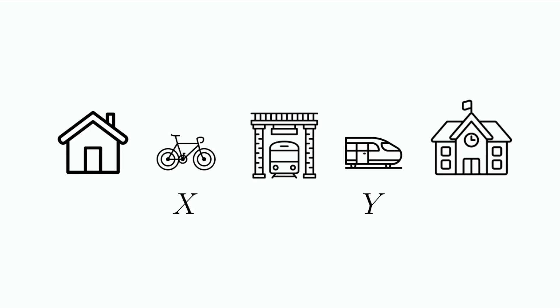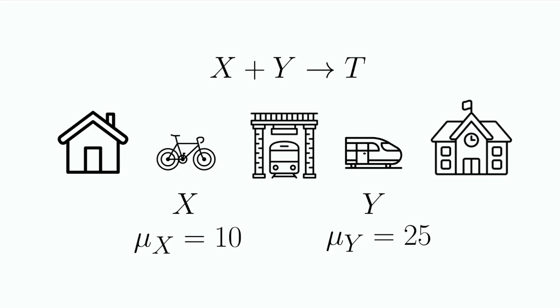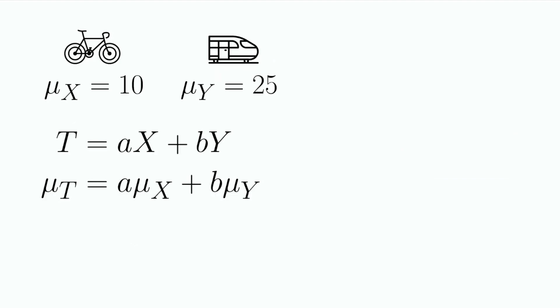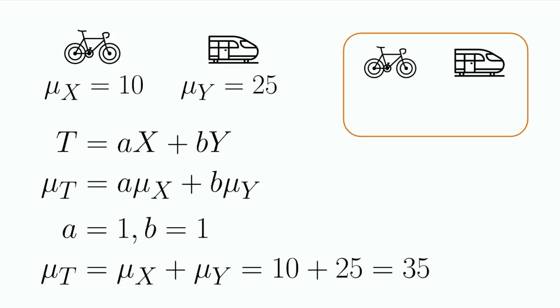Let's apply this to our commute example. The random variable for your time on a bike is X, while the random variable for your time on the train is Y. We'll rewrite your overall commuting time as T to represent total time. Let's say that μX equals 10 minutes and μY equals 25 minutes. Since T equals X plus Y, we have a equals 1 and b equals 1, so μT equals μX plus μY, which is 10 plus 25 equals 35 minutes.